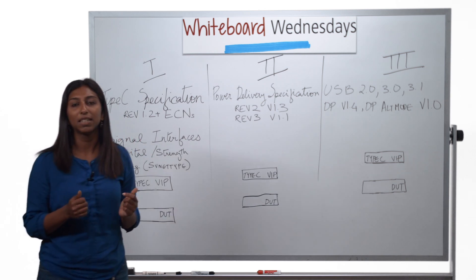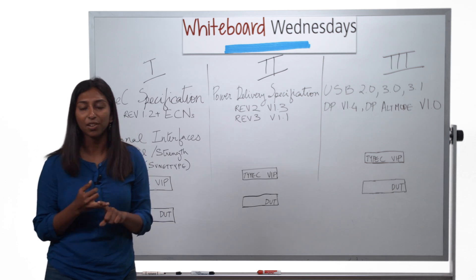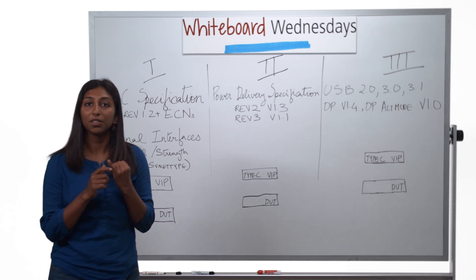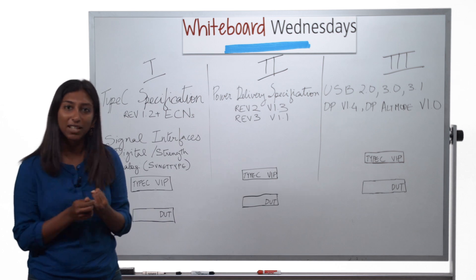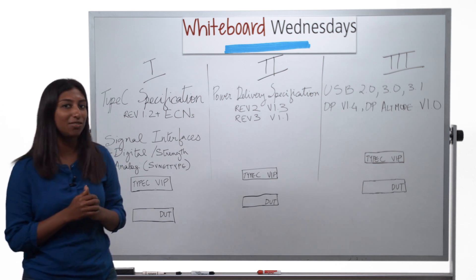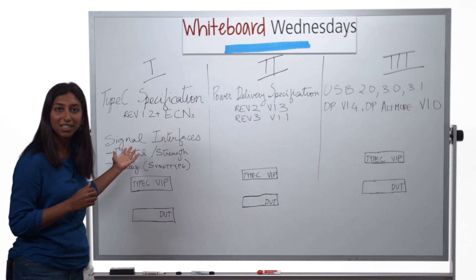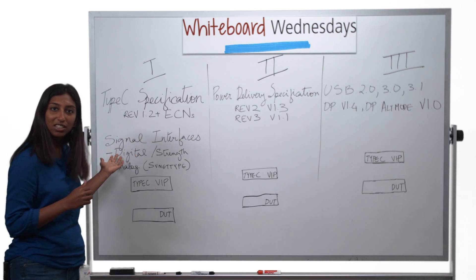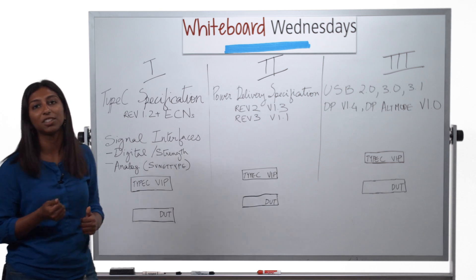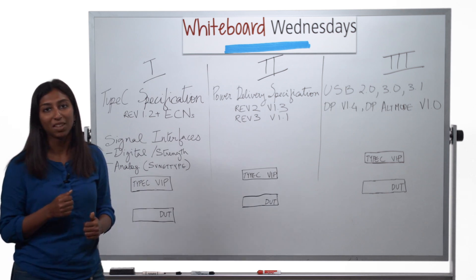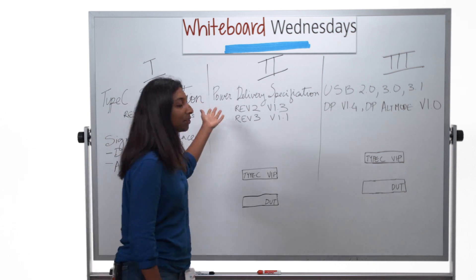You can have your Type-C configured as a source, a sink, or a DRP, or you can have it configured as a debug accessory or an audio accessory. In all these configurations, we offer two signal interfaces. The first is a digital interface, and the second is an analog flavor using SVNet type.